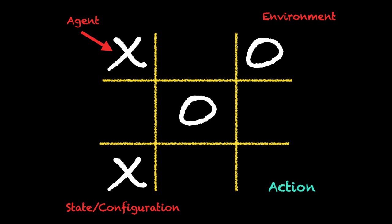Initially the agent does not have any experience of the environment and performs actions more or less randomly, but as time goes on the agent learns from this process and performs actions in a better way rather than just doing it randomly. In order to learn to perform actions better, the agent needs to have a policy.